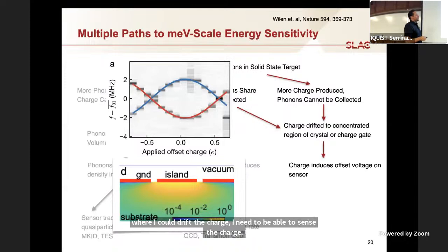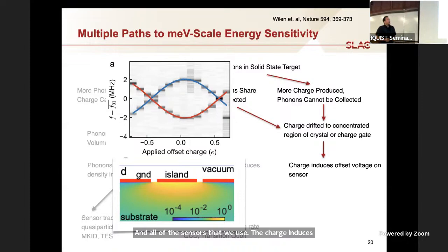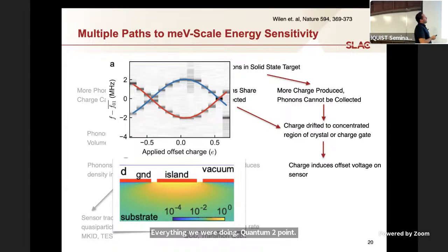Ideally, it'd have some indirect gap. But if I want to find such a material where I could drift the charge, I need to be able to sense the charge. All of the sensors that we use, the charge induces some image charge on a sensor that converts it to a voltage. Again, there's quantum 1.0, everything we were doing. Quantum 2.0, we're using qubits to do this. You can use something like a transmon qubit, where if I bias at a place where the even and odd states are separated in frequency space, I can see charge collection as drift on the supplied offset charge, which is distinct from parity switching events.